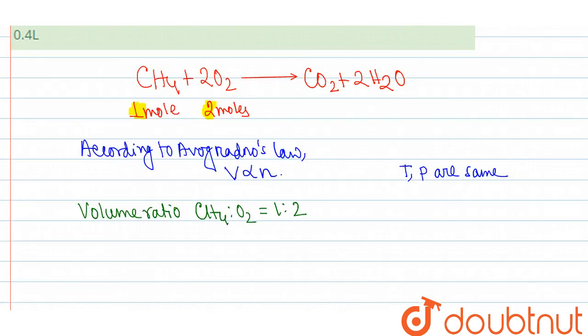So we can say for one liter methane, oxygen required is 2 liter.